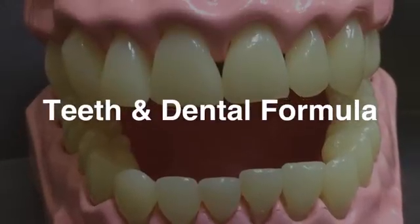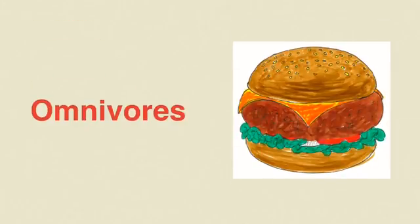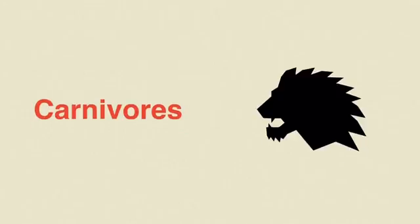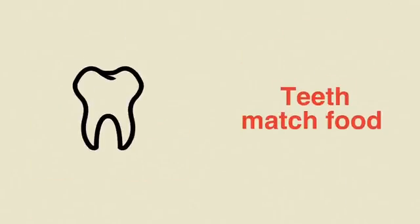This video covers the teeth and the dental formula. Humans are omnivores, meaning that we eat both plant material and animal material. Carnivores eat meat only. Herbivores, like our rabbit here, eat only plant material. If you examined the teeth of omnivores, carnivores and herbivores, you would see that they're quite different. They might have more of one tooth and less of another. Their teeth match their food.